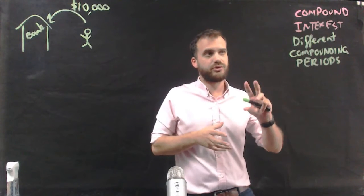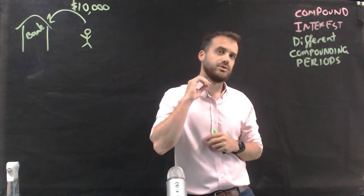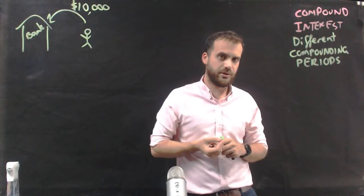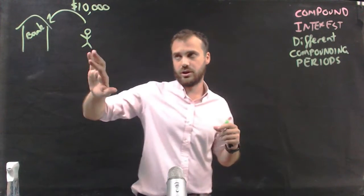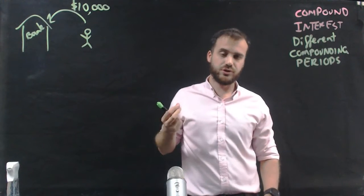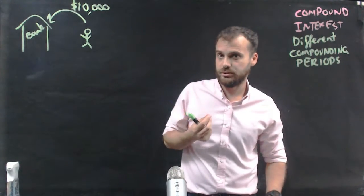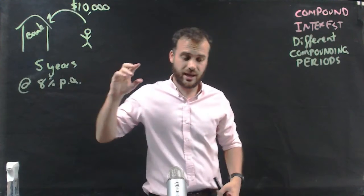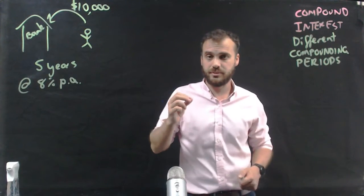This video is about compound interest, specifically different compounding periods. We have a scenario where someone is putting $10,000 in the bank for five years at 8% per annum.